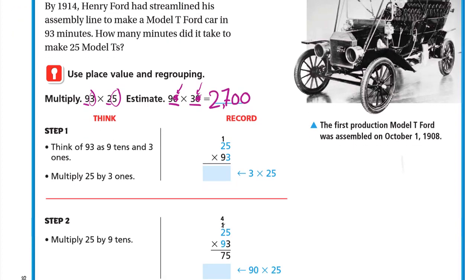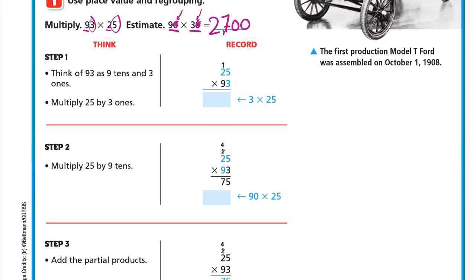Now let's actually multiply 93 by 25. Step 1: think of 93 as 9 tens and 3 ones. First we'll multiply 25 by the 3 ones. 3 times 5 is 15 — write 5 down and carry 1 up. Then 3 times 2 is 6, plus 1 is 7. So 3 times 25 is 75.